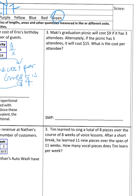Now, the very first thing you should always do is annotate. So let's see, it's graduation, it costs $9 if there are 3 people that attend. If the picnic has 5 people that attend, it will cost $15. What is the cost per attendee?